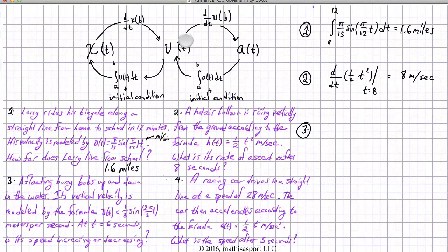All right. So, let's first find out whether the velocity is positive or negative. So, I'm going to say one third sine of 2 pi over 5 t evaluated at t equals 6. Let's find that.